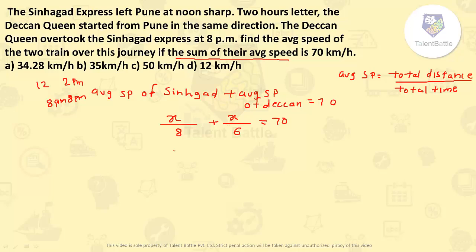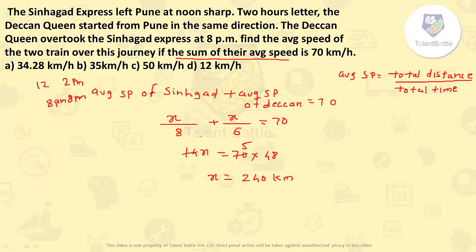Sum of their average speeds is 70. So we calculate: x/8 + x/6 = 70. That gives 6x + 8x = 70 × 48, so 14x = 3360, meaning x = 240 kilometers. So x — the distance travelled by both Sinhagad Express and Deccan Queen — is 240 km.